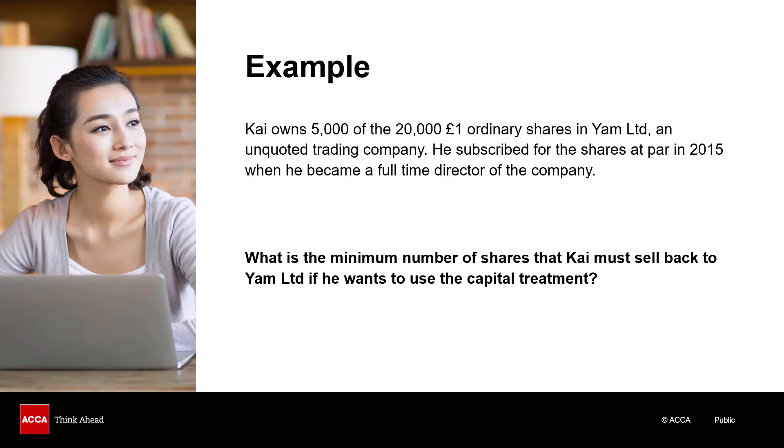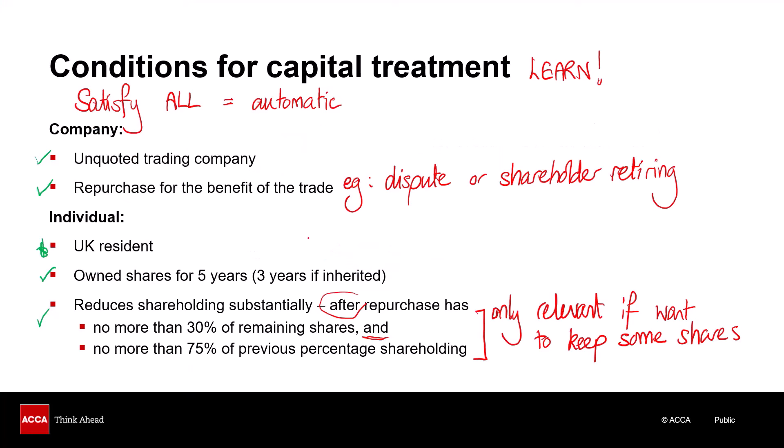Let's think about a slight variation on that example. Same scenario as before, but this time the question is: what is the minimum number of shares that Kai must sell back to Yam Limited if he wants to use the capital treatment? Going back to our conditions, remember that we need a substantial reduction. After the repurchase the shareholder can have no more than 30% of the remaining shares and no more than 75% of the previous percentage share. This is not quite as straightforward as it seems because the shares that are repurchased will be cancelled.